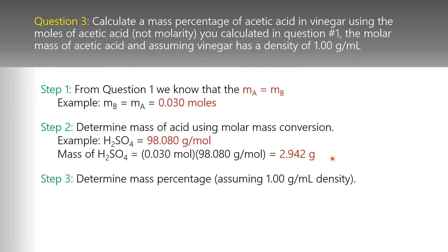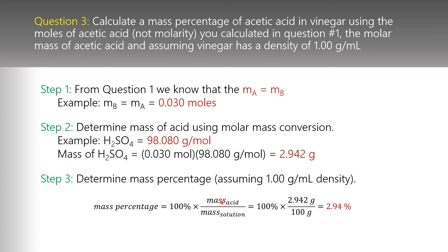Then we determine mass percentage: mass of solute divided by mass of solution, times 100%. Our solute is 2.942 grams. The solution was 100 milliliters; using 1 g/mL density, that's 100 grams. So: 2.942 g / 100 g × 100% = 2.94% H₂SO₄ by mass. That's our first percent value.